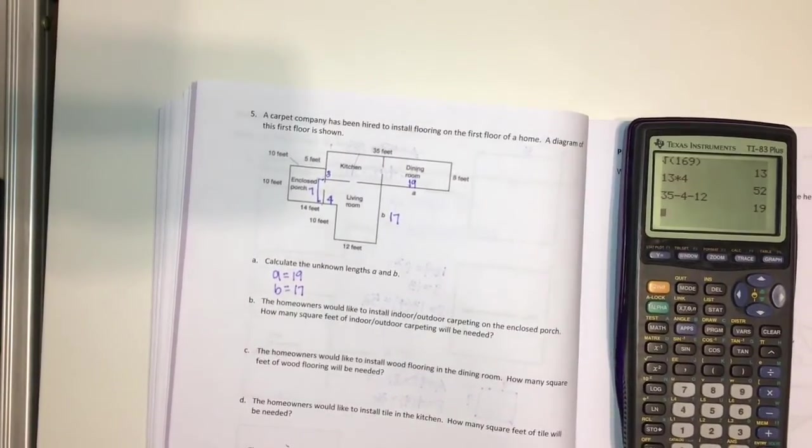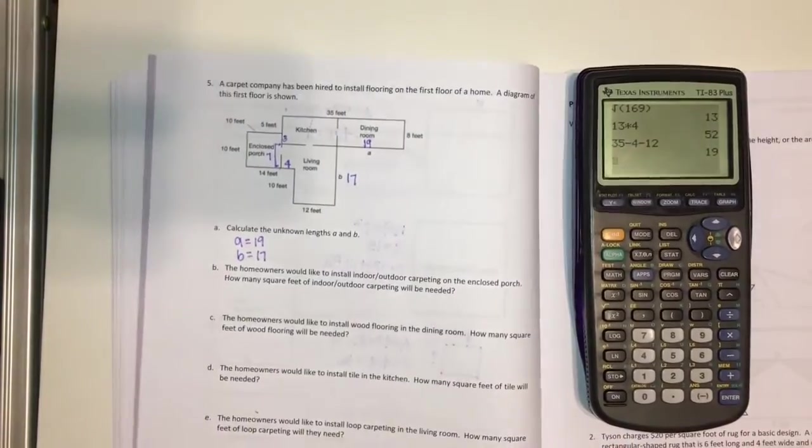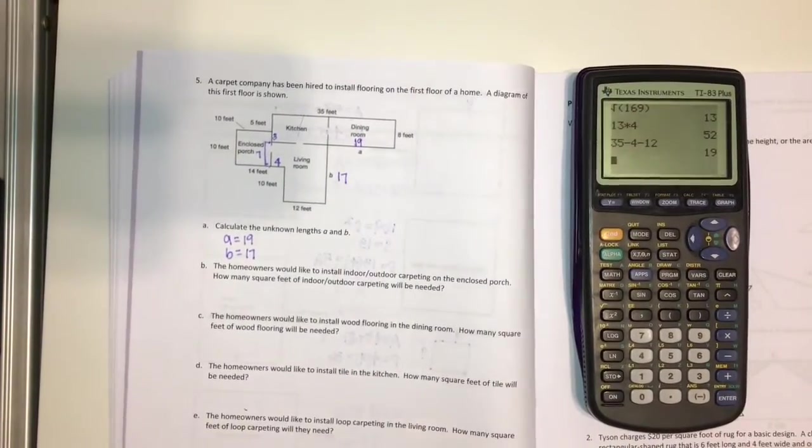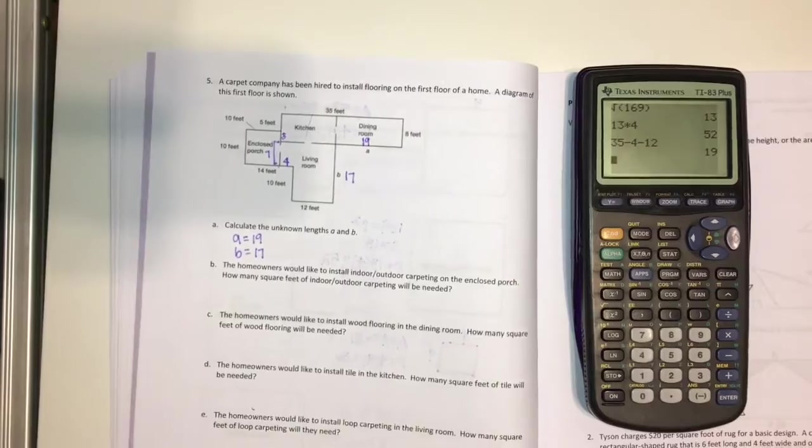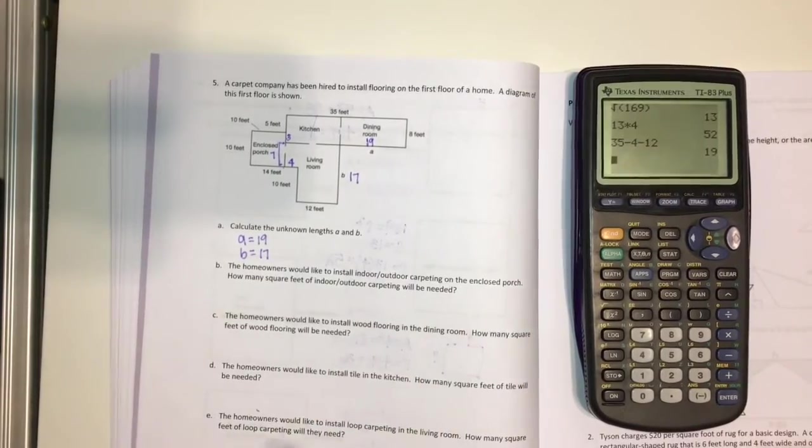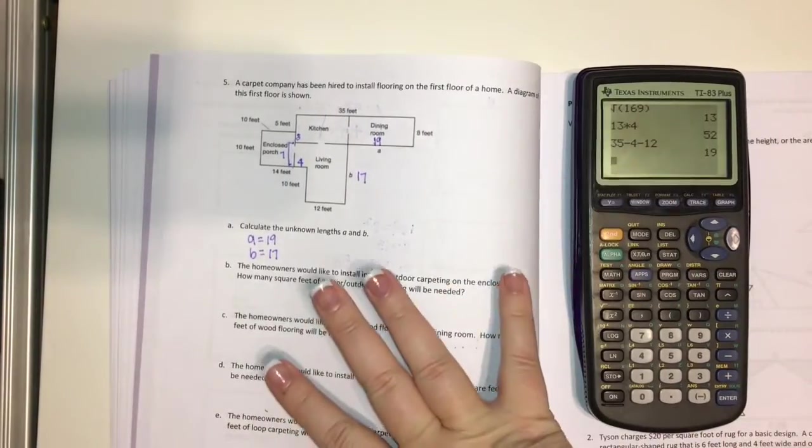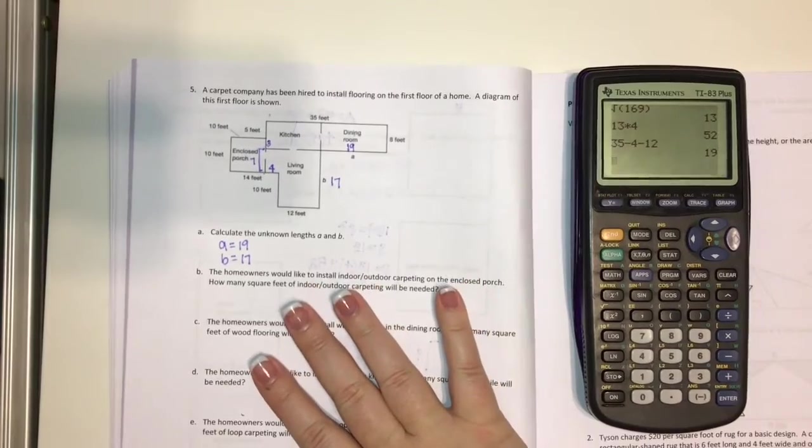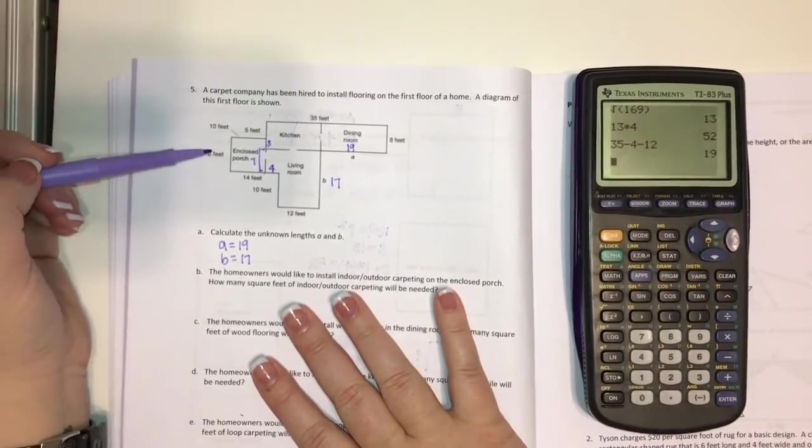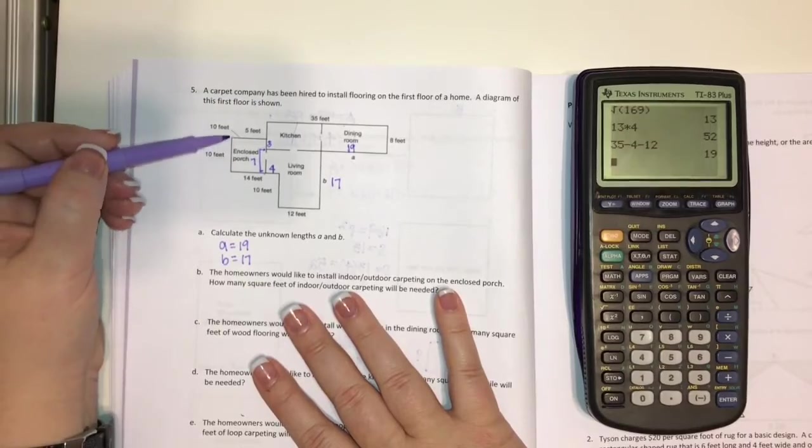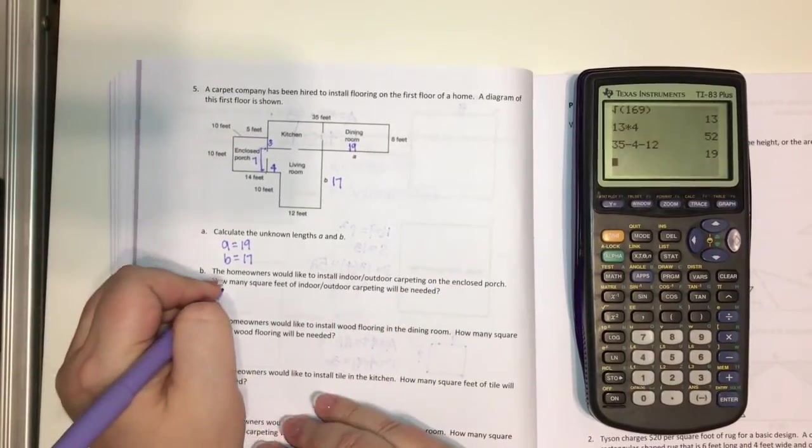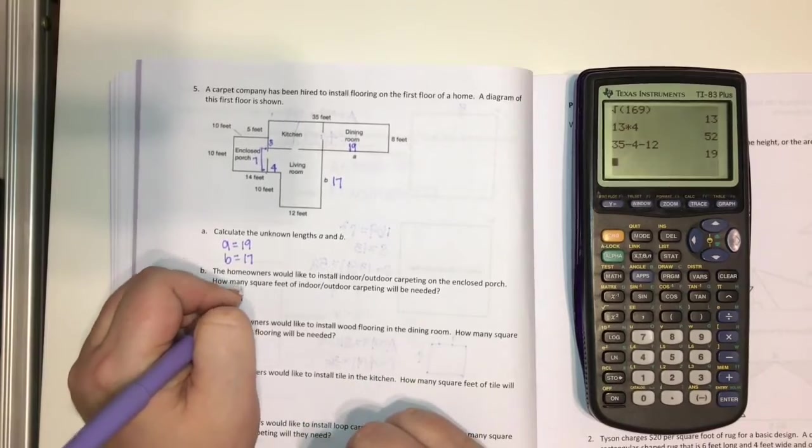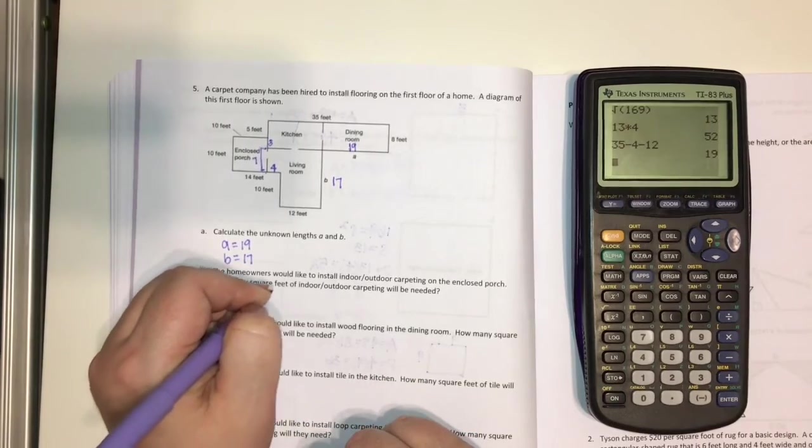Okay, the next part. It says the homeowners would like to install indoor-outdoor carpeting on the enclosed porch. How many square feet of indoor-outdoor carpeting will be needed? So, if we're installing carpet, that's going to be an area problem. And so we would just need to multiply the two parts together. Well, this part's 10 and this part's 10, so this is a square. So the area is going to equal 10 squared, which is 100.